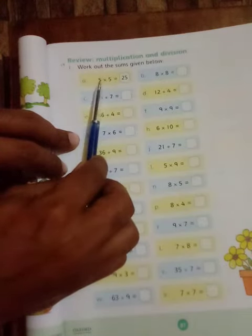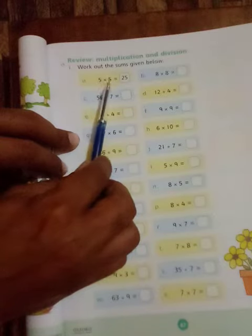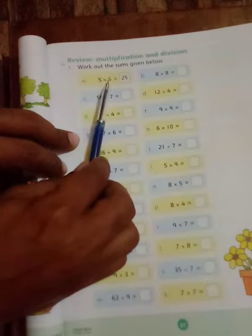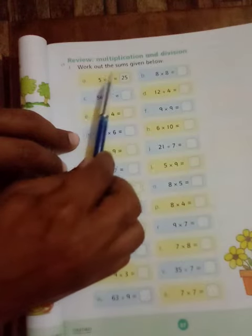5 ones are 5, 5 twos are 10, 5 threes are 15, 5 fours are 20, 5 fives are 25. If you have the 5 table, 5 times you have a sign.